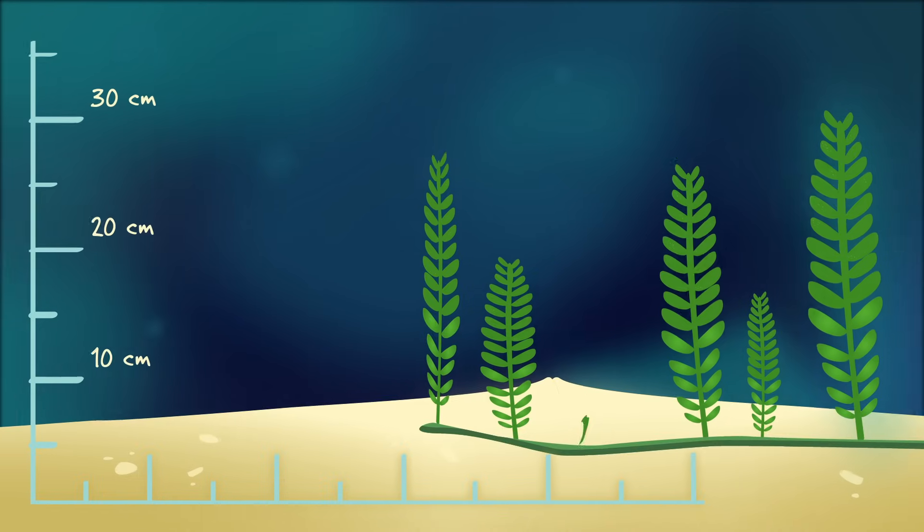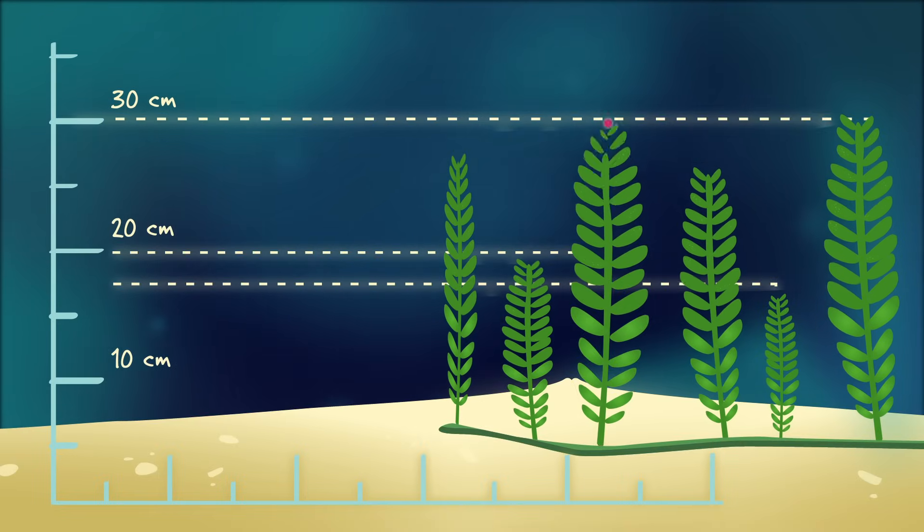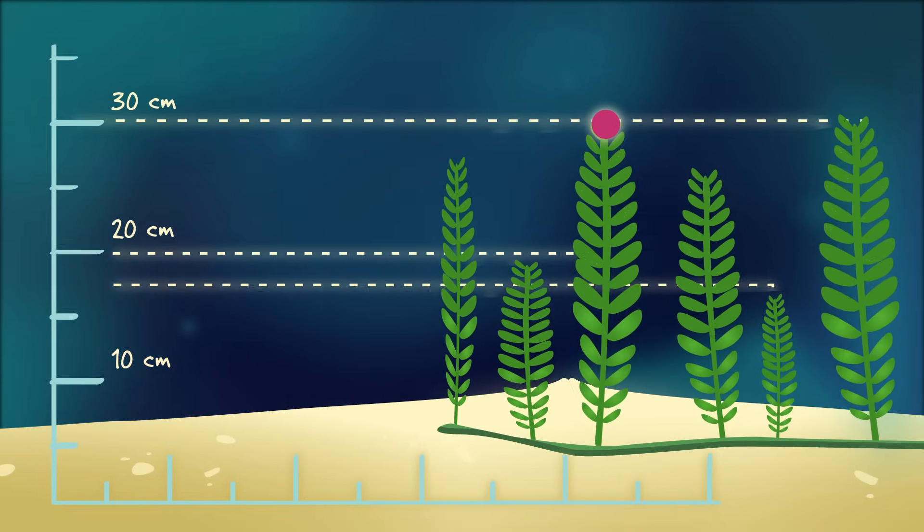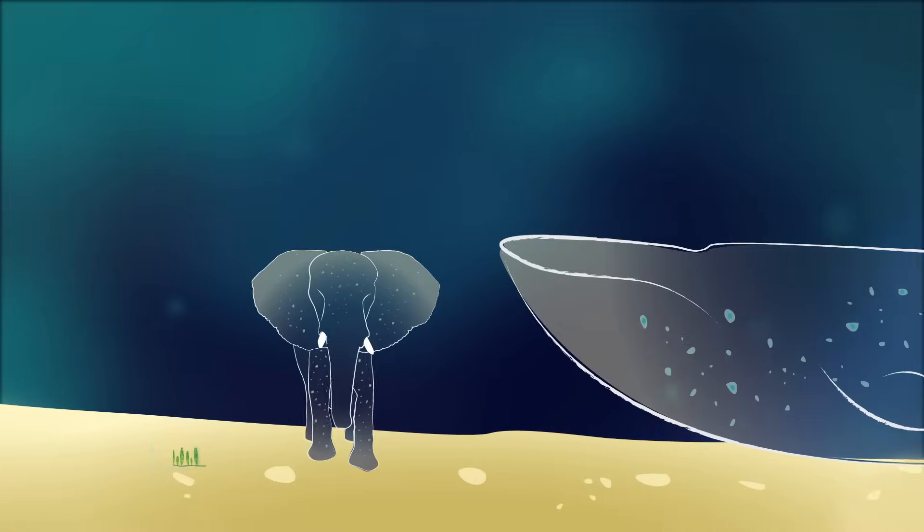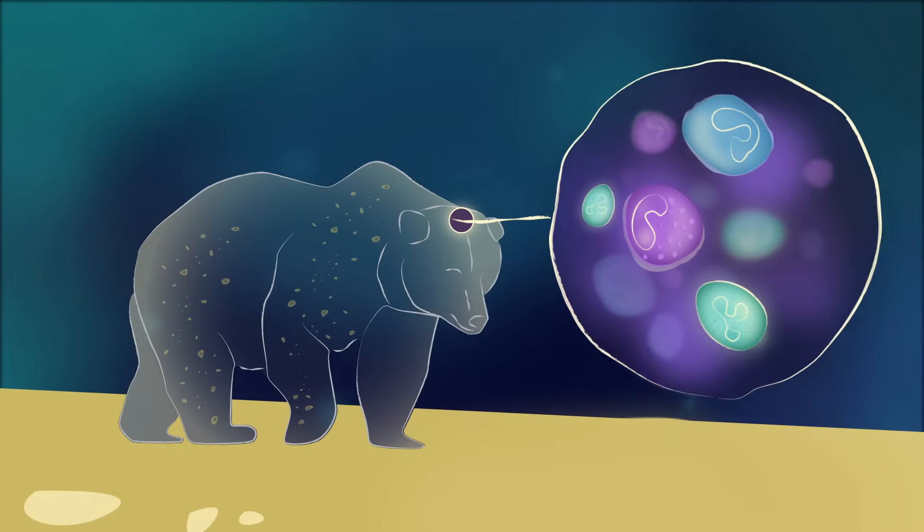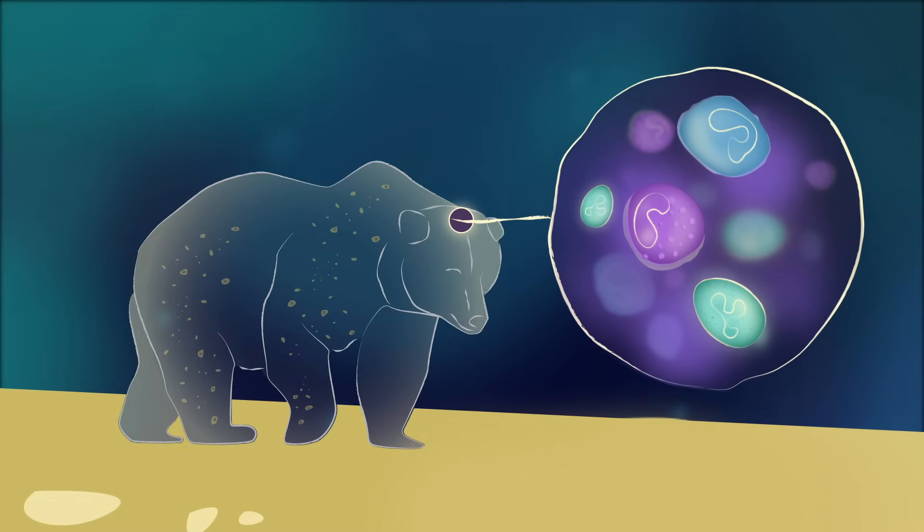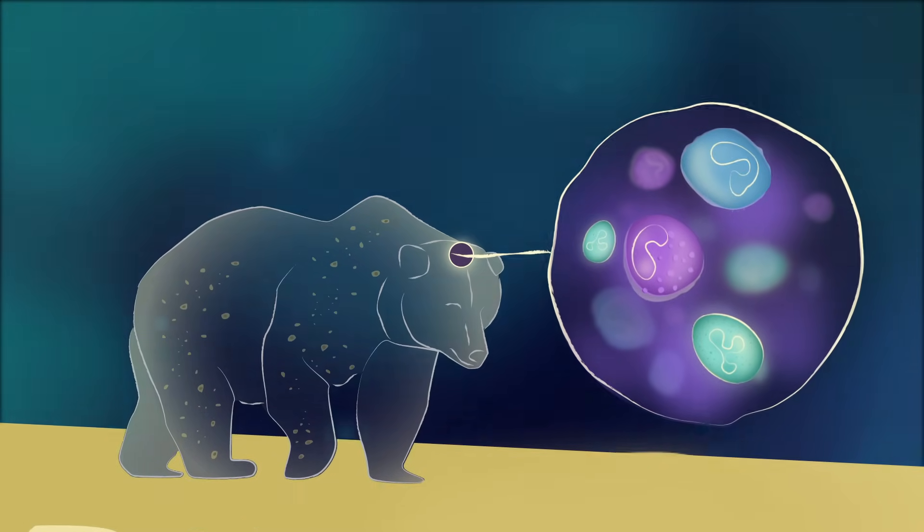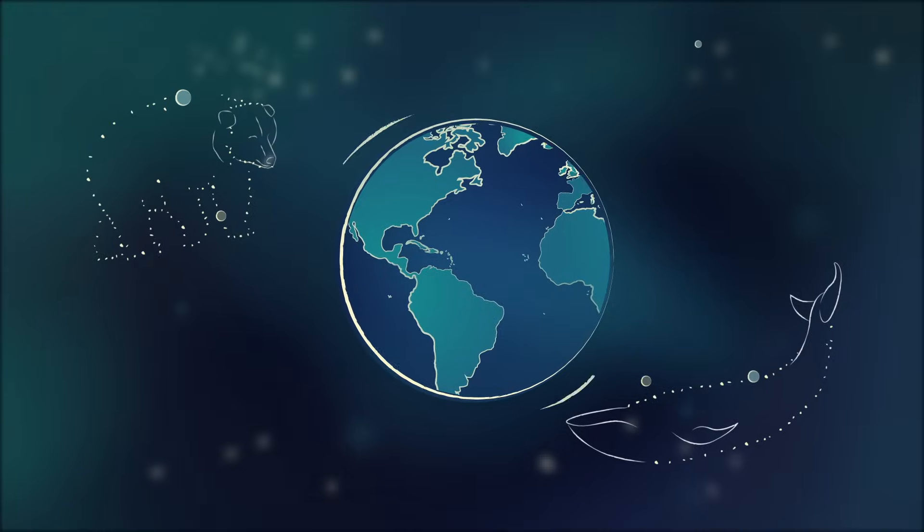Yet even the biggest unicellular organisms have limits, and none grows nearly as large as the elephant, whale, or bear. But within every big creature are trillions of minuscule cells, perfectly suited in all their tininess to keeping the Earth's giants lumbering along.